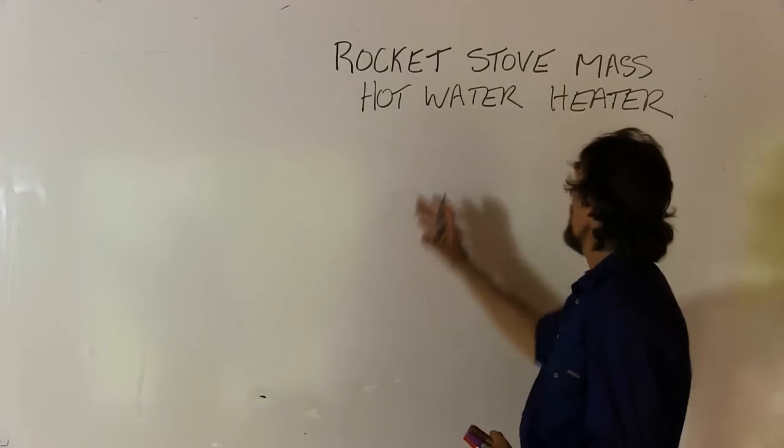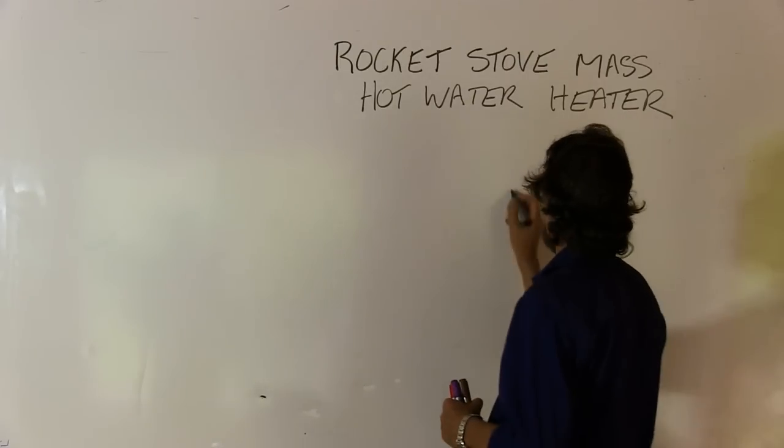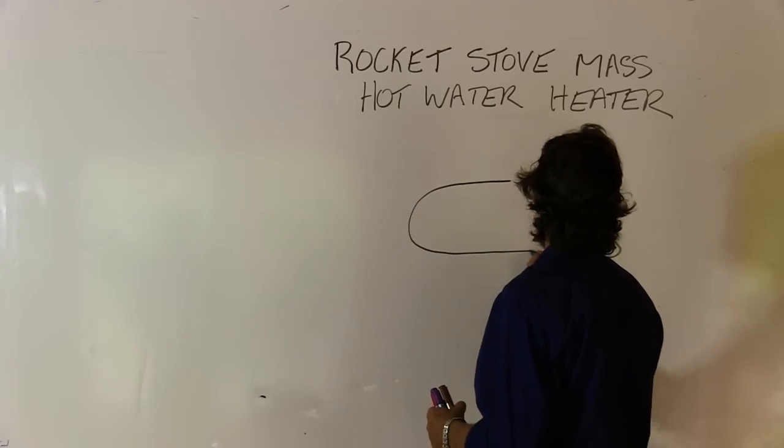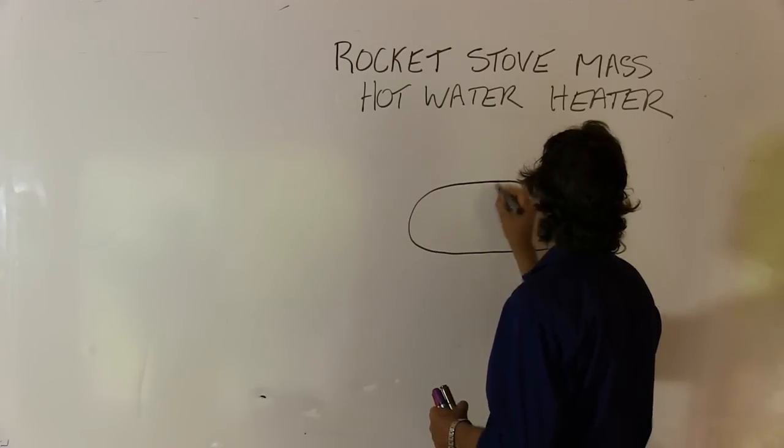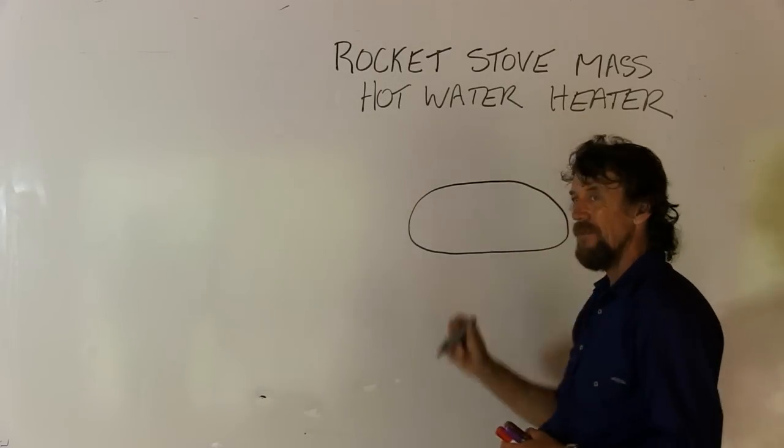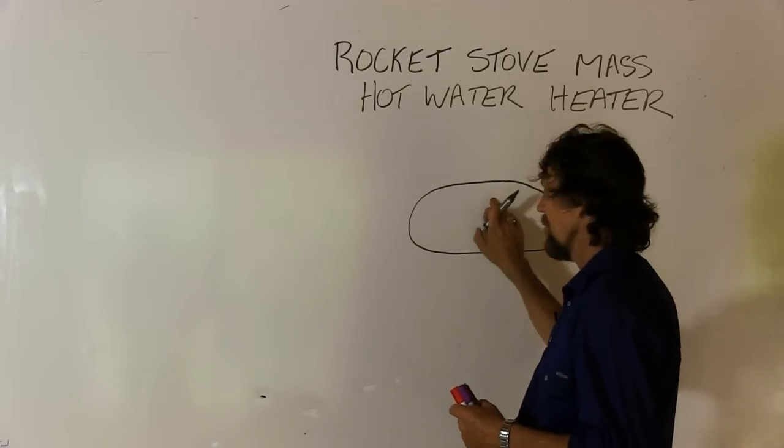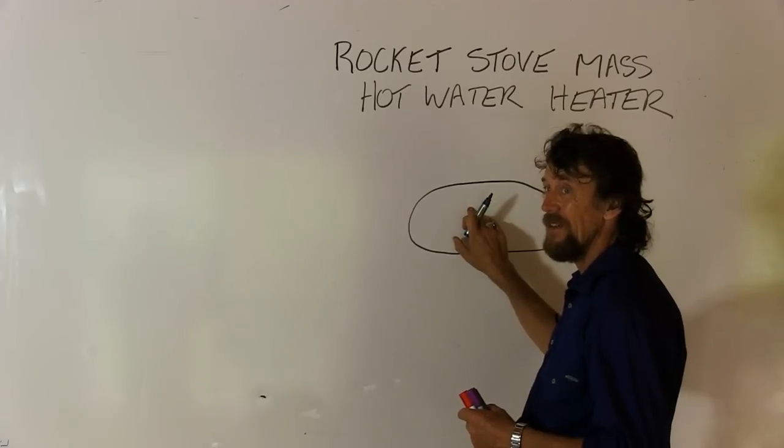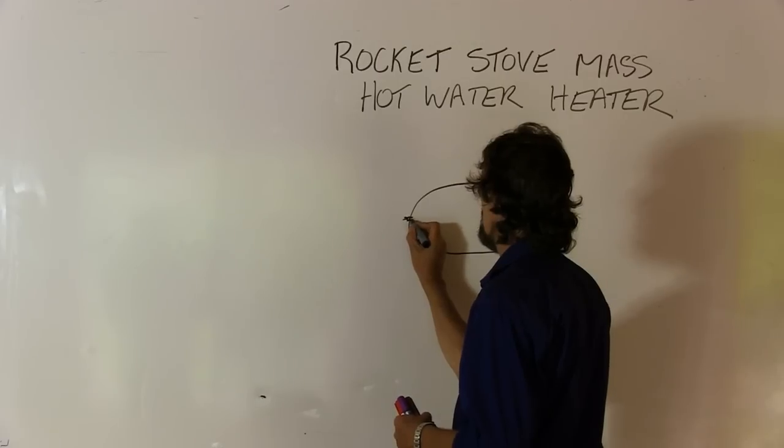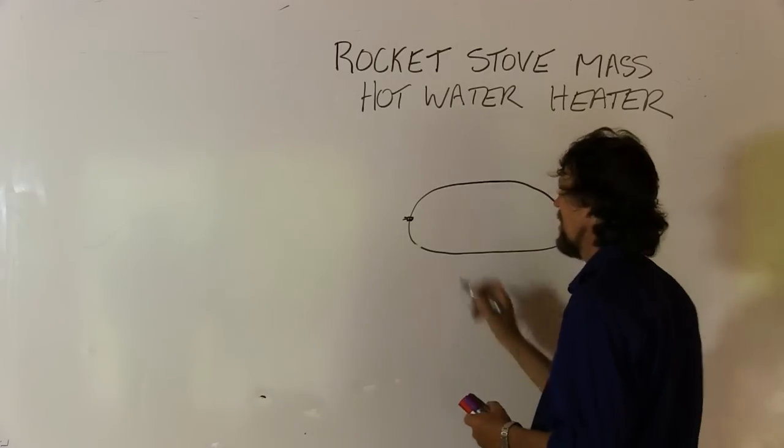I'm going to explain the rocket stove mass hot water heater and simplify it a little bit. What we've got is a stainless steel center from an electrical hot water system. If you find the right one, often the electricity part is broken and that's why it's been thrown away, but the tank is fine. It'll have an input pipe going into it and an output pipe going out of it. If it hasn't, then you've got to fit those.